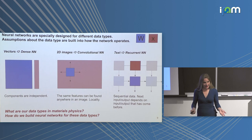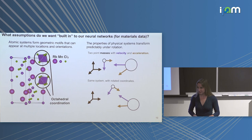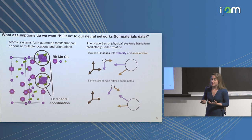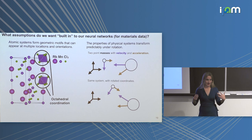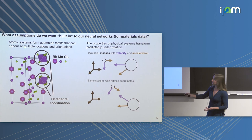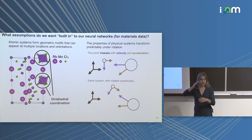The question is: what are our data types in materials physics and how do we build networks for these data types? I want to flip the question by first asking what assumptions do I actually want my neural network to have. Atomic systems form geometric patterns at varying length scales, but these patterns can occur in any orientation or location. I'd like my neural networks to understand that if I see an octahedral pattern — like in rubidium manganese chloride crystals — in two different orientations, that's the same thing.